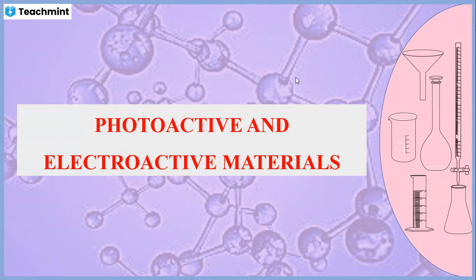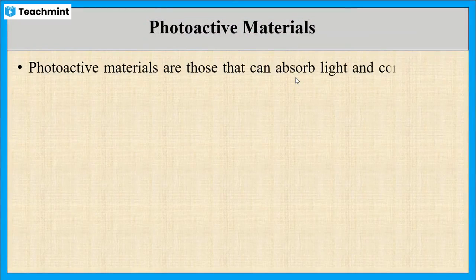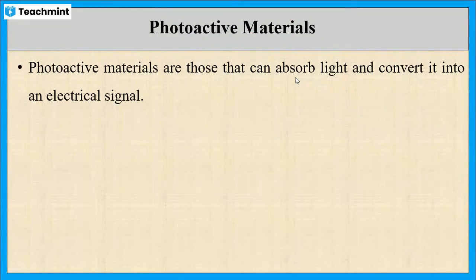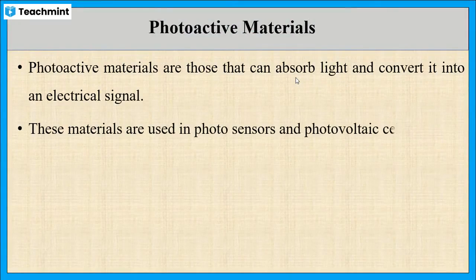In this session, I am going to explain about photoactive and electroactive materials. First, let us see photoactive materials. These are the materials which absorb light and convert it into electrical signals. The best example is PV cells, or photovoltaic cells.